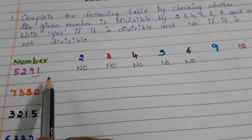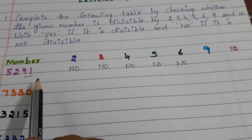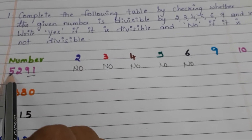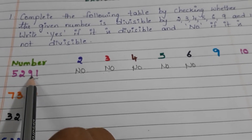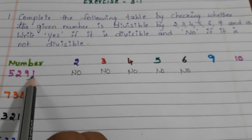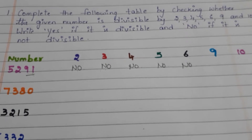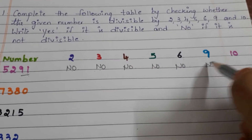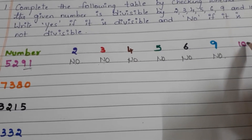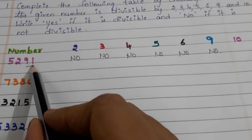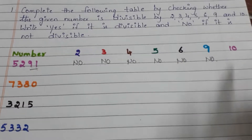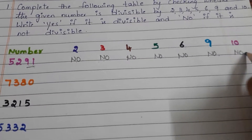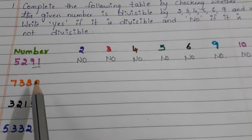What about 9? Add all digits: 5 plus 2 is 7, 7 plus 9 is 16, 16 plus 1 is 17. 17 is not a multiple of 9, so it is not divisible by 9 — write no. What about 10? In the ones place, 0 should be there, but here 1 is there, so it is not divisible by 10 — write no. Let us go to the next number.